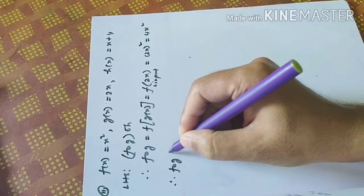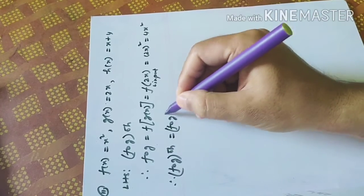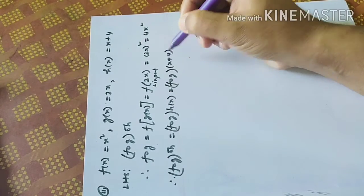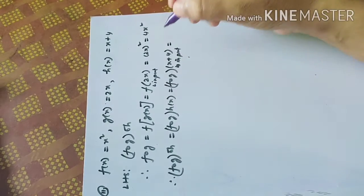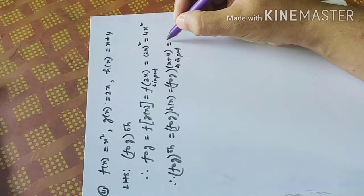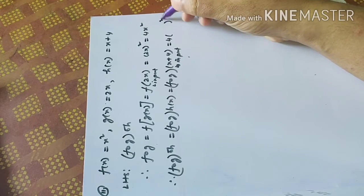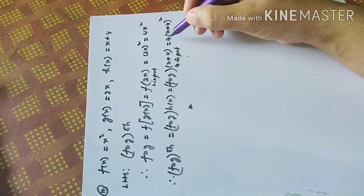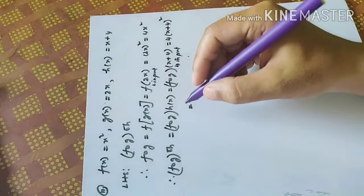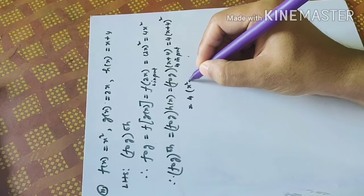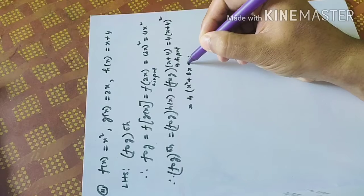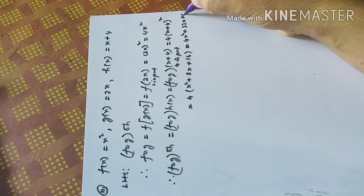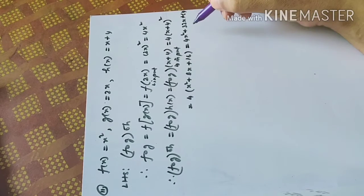Now find (FOG)OH: FOG of h(x). h(x) is x plus 4, which becomes the input. FOG is 4x square — wherever x is there, apply x plus 4, giving 4(x plus 4) square. Expanding using (A plus B) whole square: 4 times (x square plus 2 times x times 4 plus 4 square), which is 4x square plus 32x plus 64. This is equation number 1.